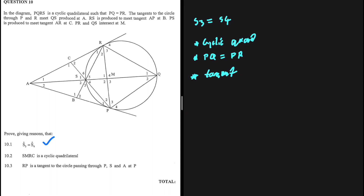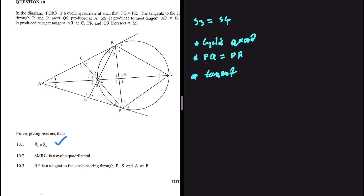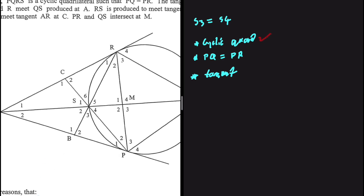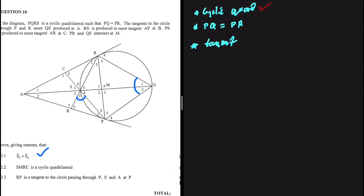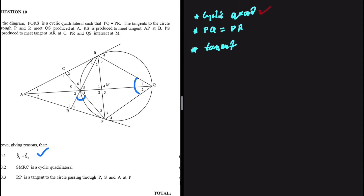Many people said they couldn't answer a single question from question 10 — let's see if we can get at least one correct. For 10.1, our first keyword is cyclic quad. So if SRQP is a cyclic quad, then S3 should be equal to angle Q. I'll write that as part of my solution: S3 equals Q, because S3 is an exterior angle of a cyclic quadrilateral.